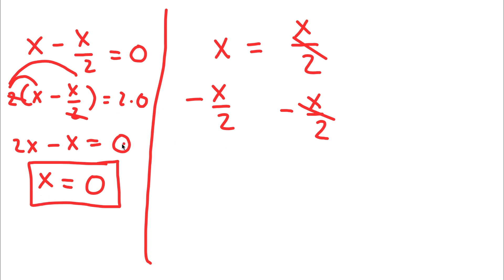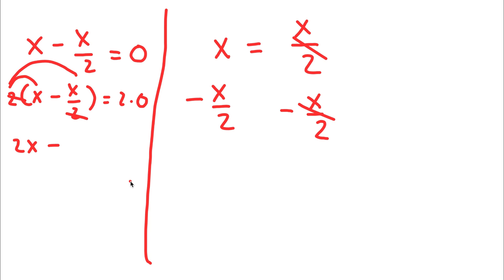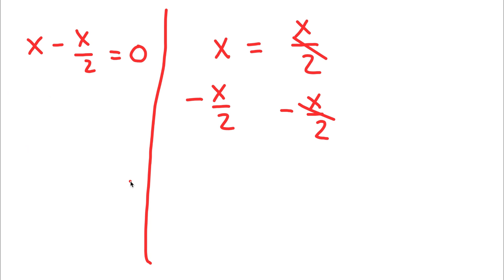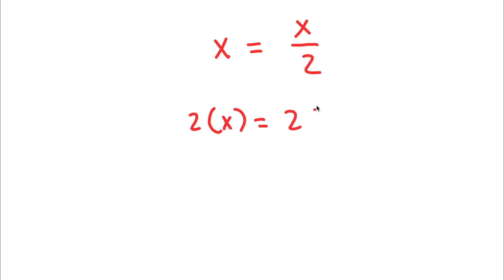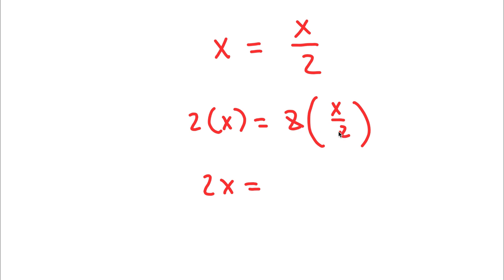Another way of solving this problem — instead of subtracting x over 2 on both sides, I can simply multiply by 2 straight away. So now I have 2 times x is equal to 2 times x over 2. Now, 2 times x is 2x, and 2 times x over 2 — the 2 simply cancels out, so I'll be left with x.